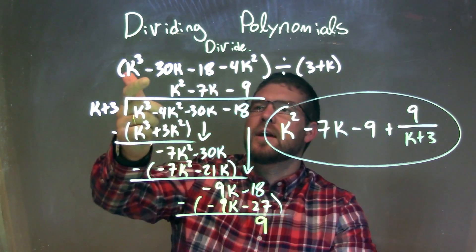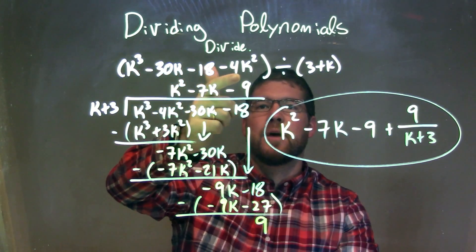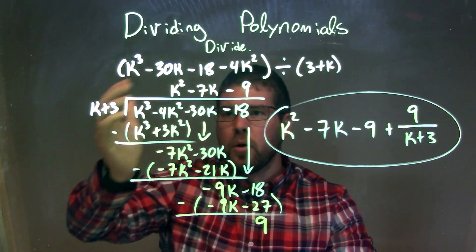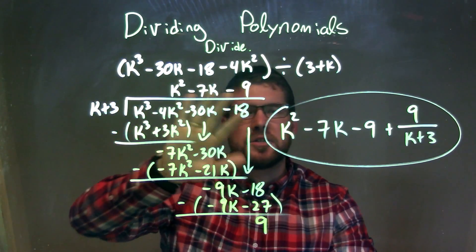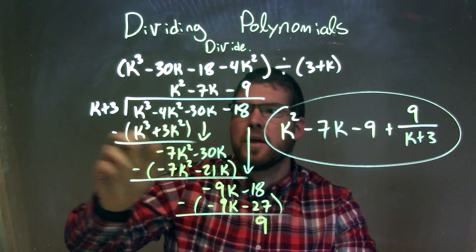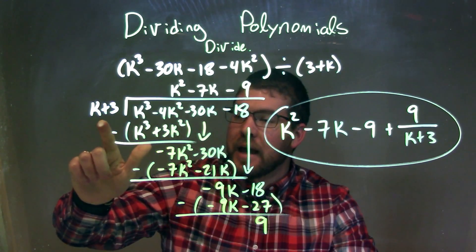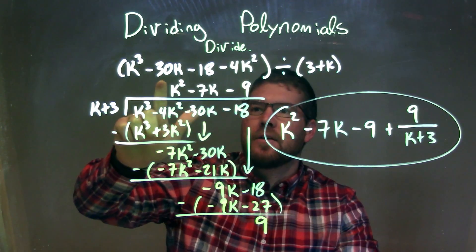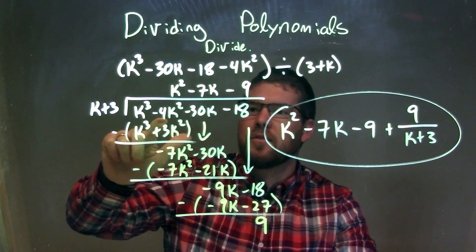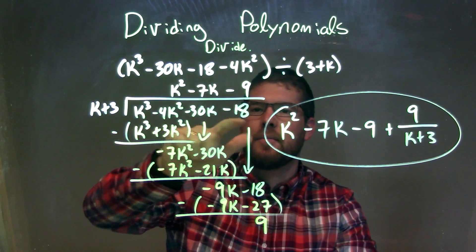So let's recap. We're given k to the third minus 30k minus 18 minus 4k squared, divided by 3 plus k. When I rewrote this, did my long division, I rearranged it to have my highest degrees first within each parentheses. So 3 plus k turned into k plus 3. k to the third minus 30k minus 18 minus 4k squared turned into k to the third minus 4k squared minus 30k minus 18.